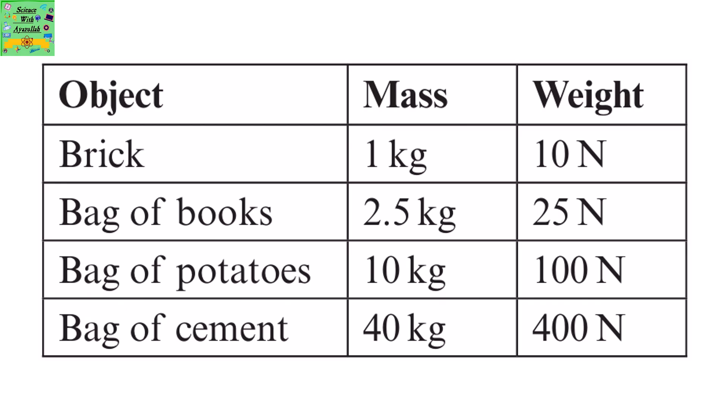Here's a list of objects, their mass and weight. For a brick its mass is 1 kg and the weight is 10 newton. Bag of books. Mass is 2.5 kg and weight is 25 newton. Bag of potatoes. Mass is 10 kg and weight is 100 newtons. A bag of cement. It has a mass of 40 kg and the weight 400 newtons.